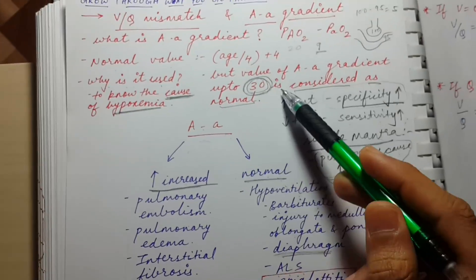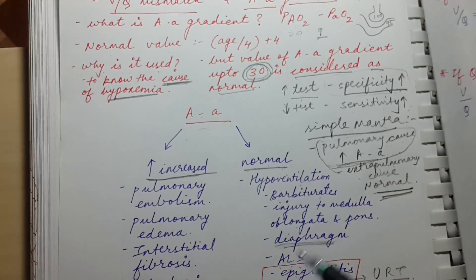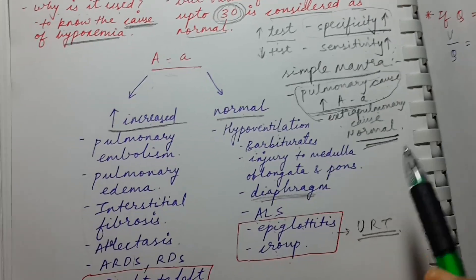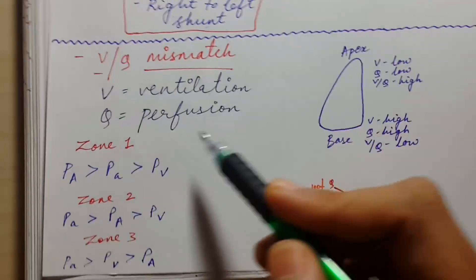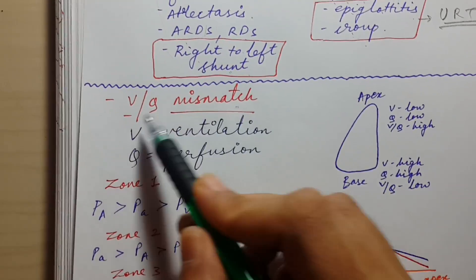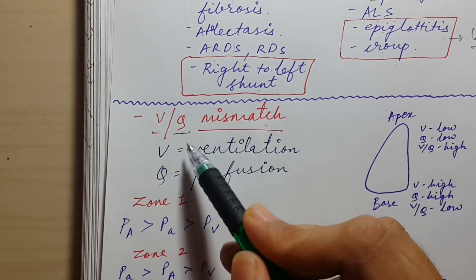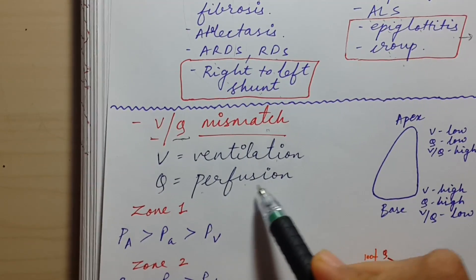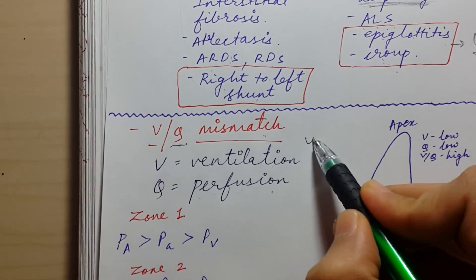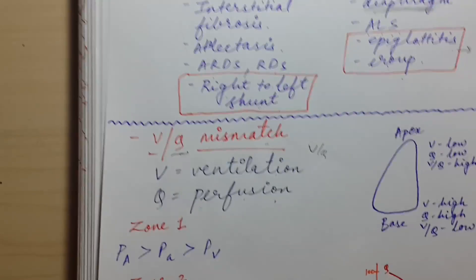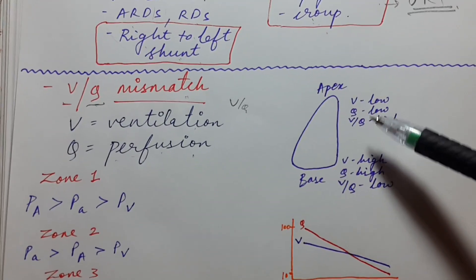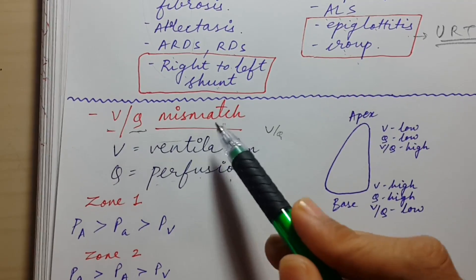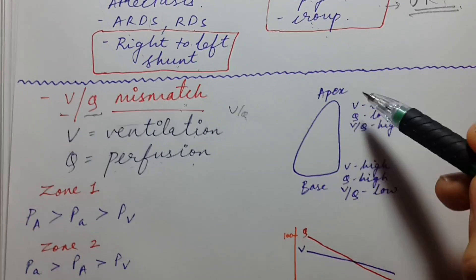If you remember this simple mantra, it will surely be very easy to answer any question. Now let's move on to VQ mismatch. VQ is basically the ratio of ventilation divided by perfusion — a very high-yield topic for Step 1 respiratory physiology.